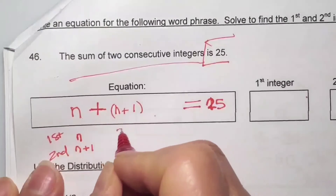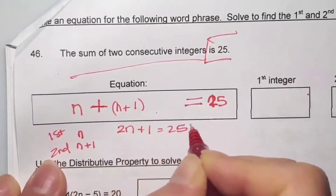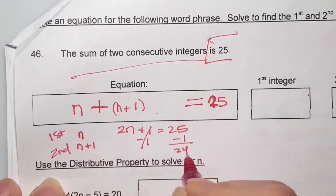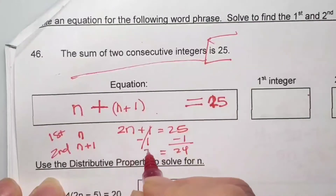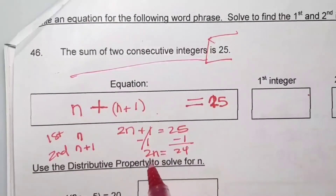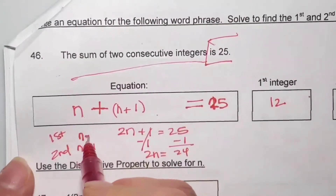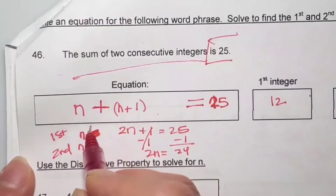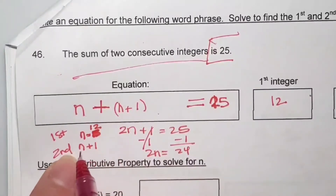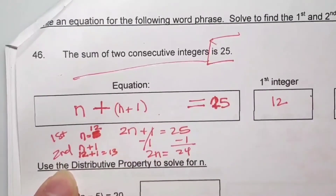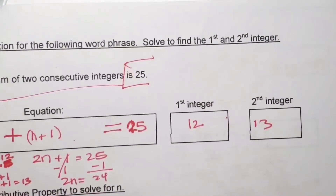Solving: n plus n is 2n plus 1 equals 25. Subtract 1 on both sides to get 2n equals 24. 2 times 12 is 24, so n equals 12. That's the first integer. Substituting, 12 plus 1 is 13. So my second integer, which is consecutive — meaning right after — is 13.